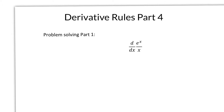In the last video, I gave you this as a problem, and hopefully you've given it a try. Even if you haven't, you could have guessed that maybe this will be e to the x divided by 1, because the derivative of e to the x is e to the x, and the derivative of x is 1. If there's division here, maybe there's division there — maybe the derivative of a quotient is the quotient of the derivatives. But I don't think that's the case, so we're going to use a limit to come up with the proper answer.